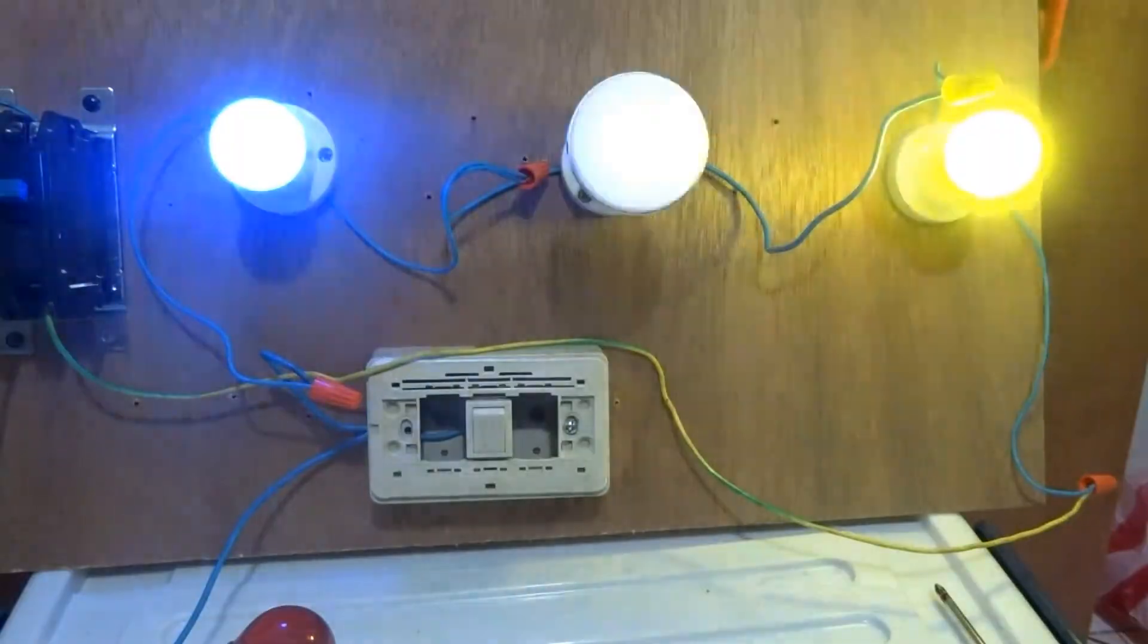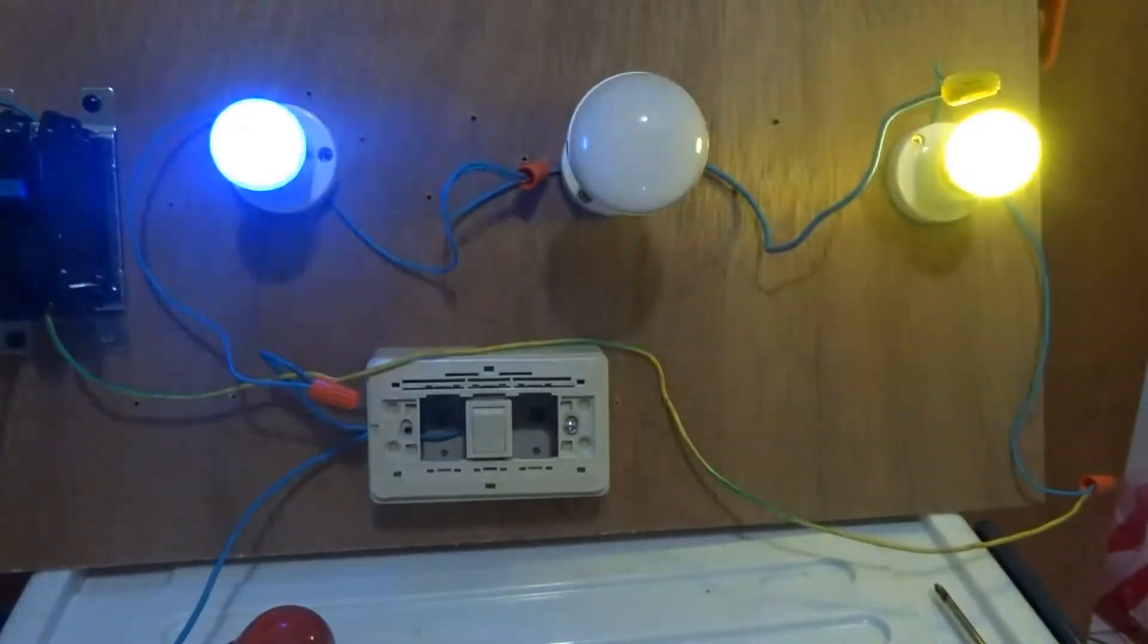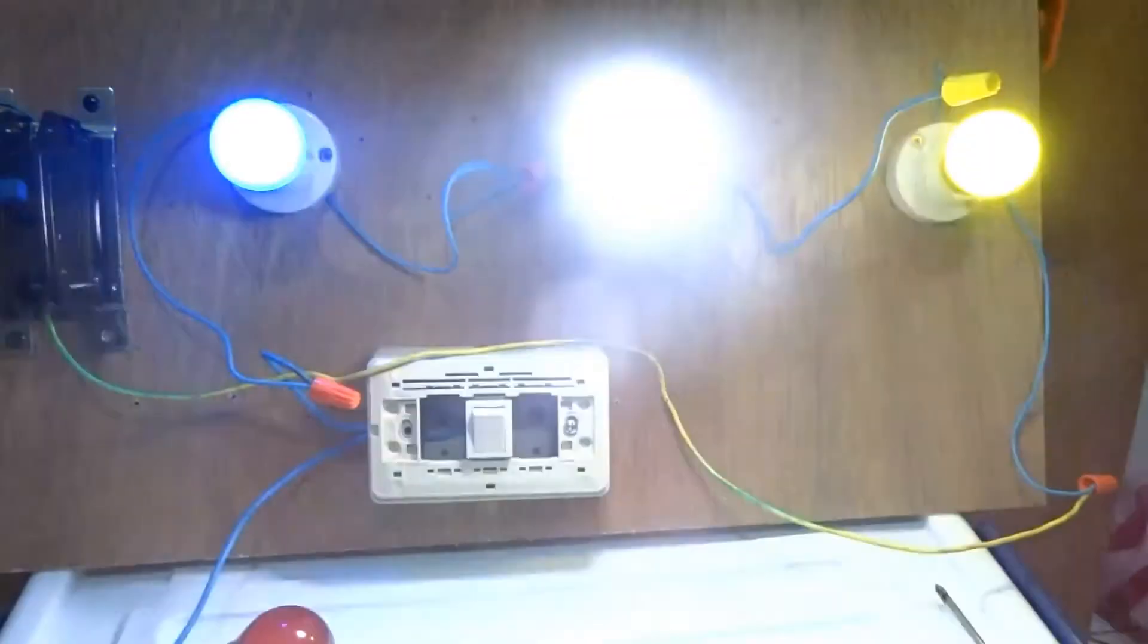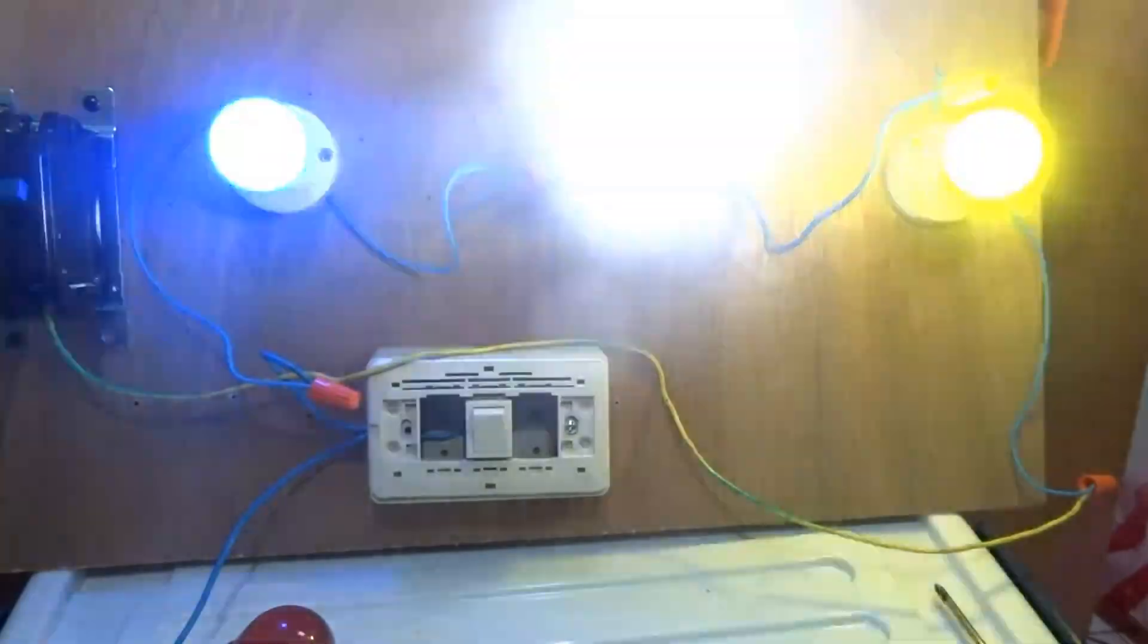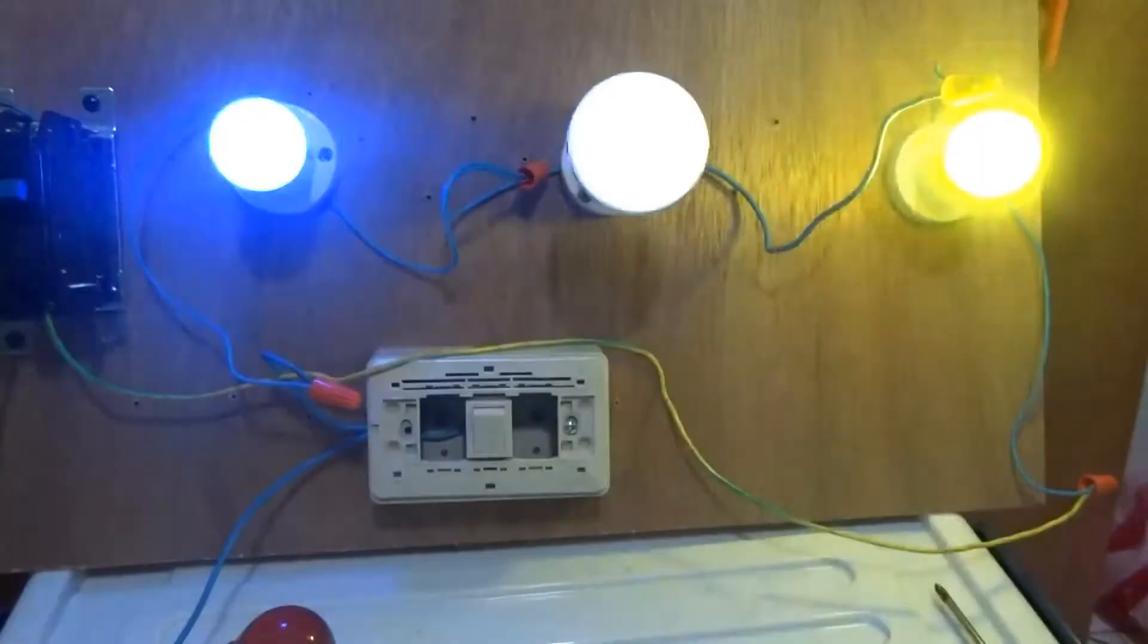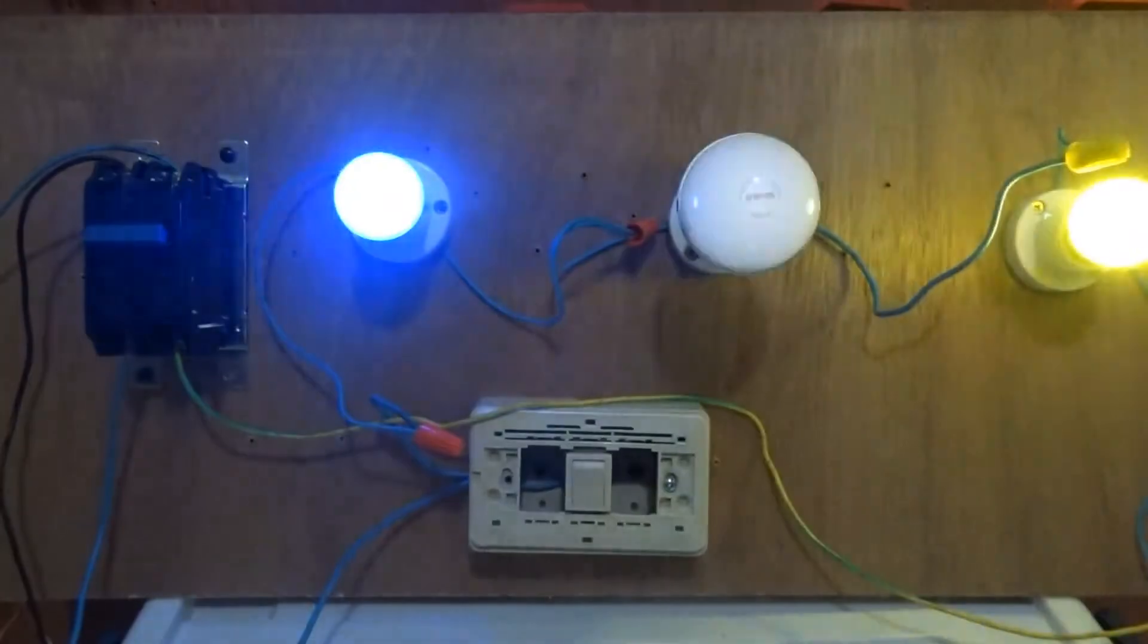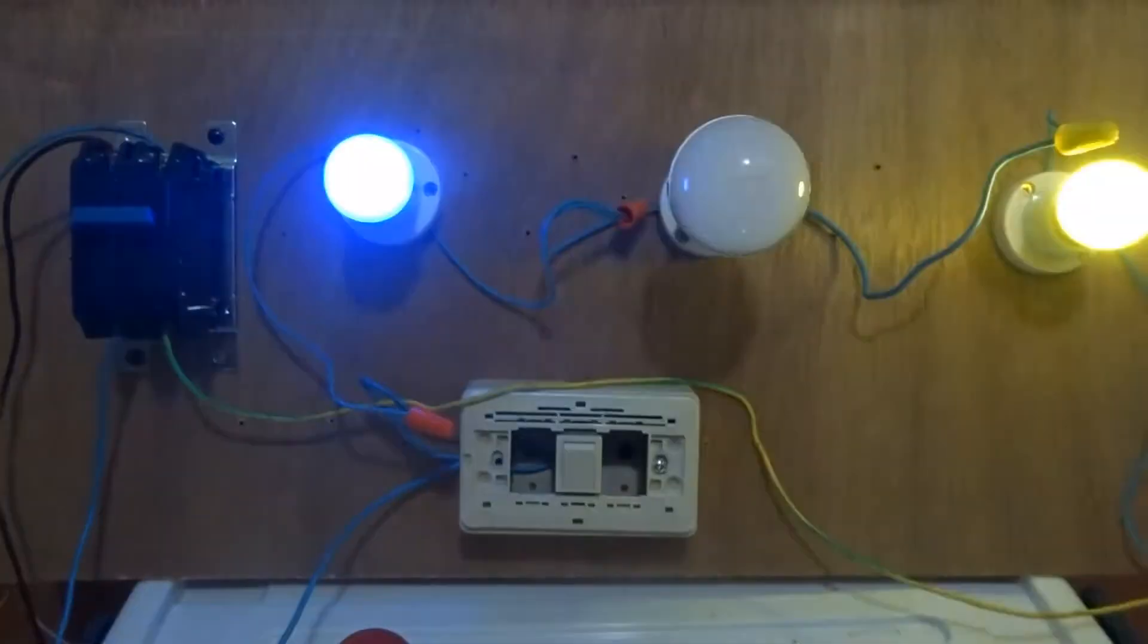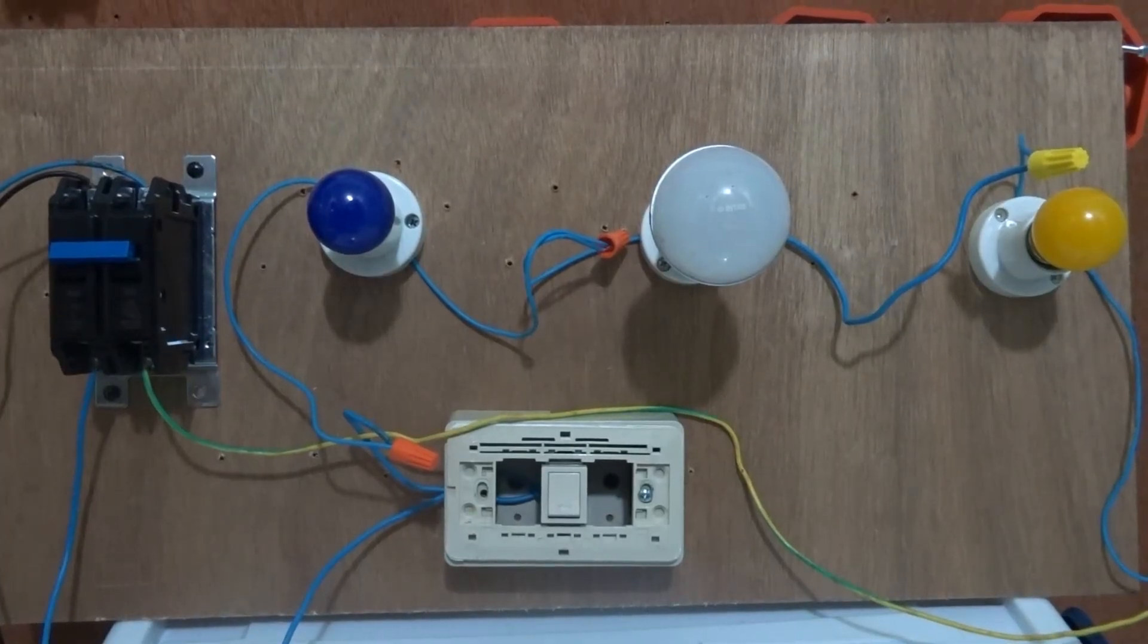I didn't use any starter of a tube light or a timer. Why is it flickering? Why is the bulb flickering?